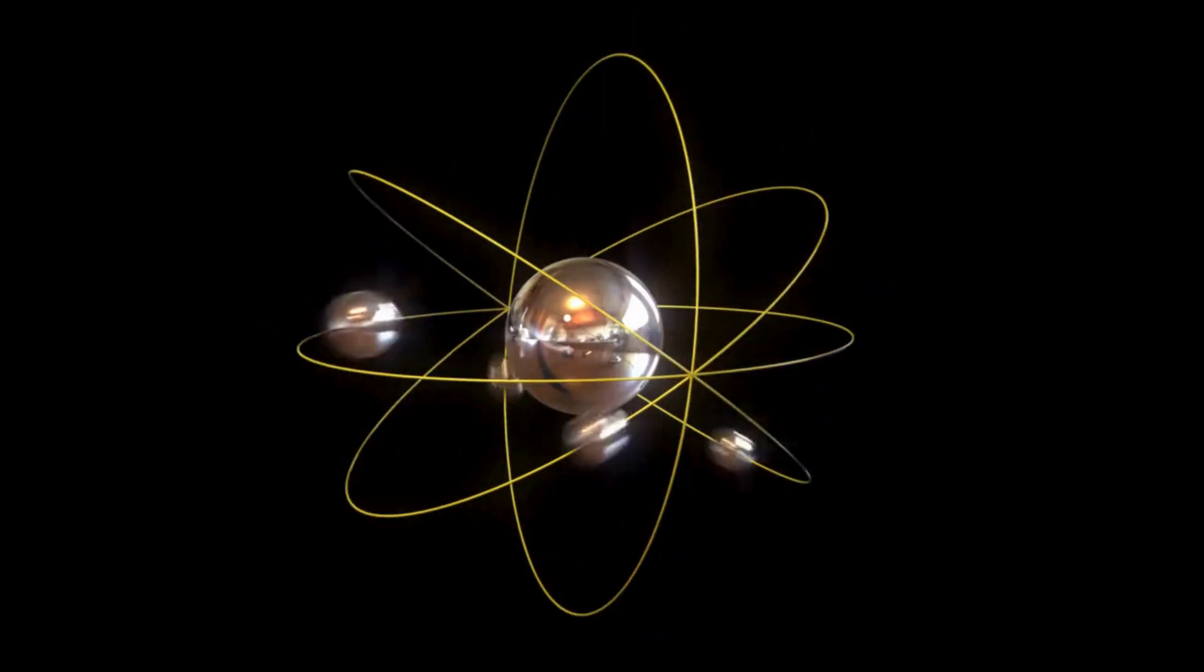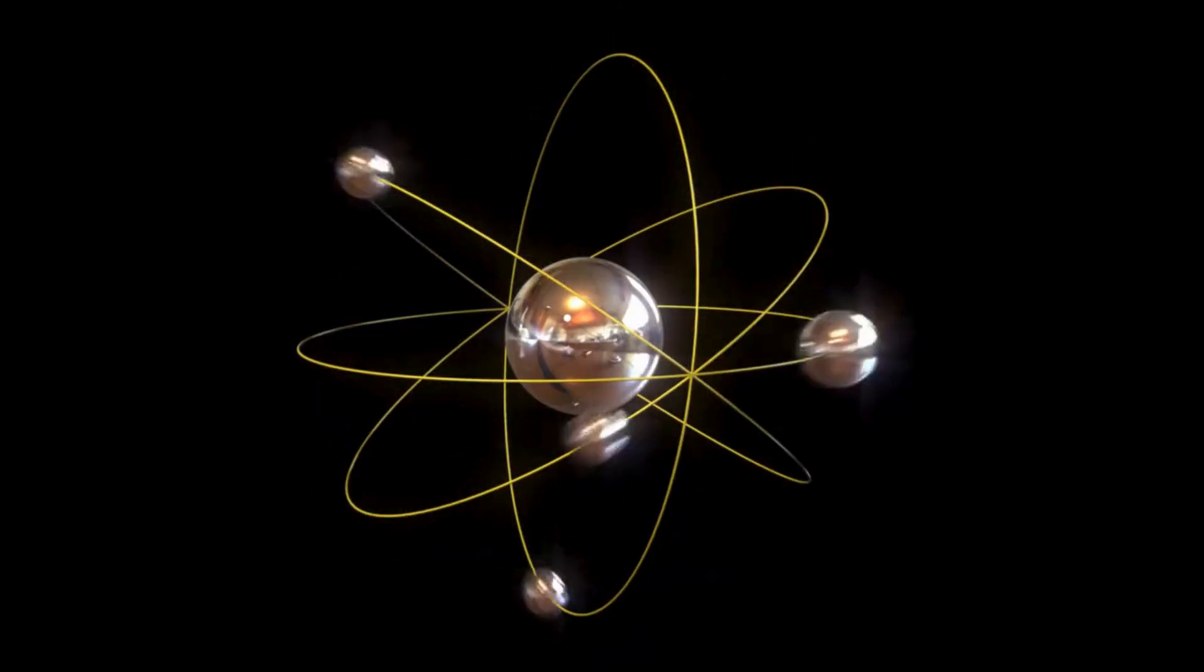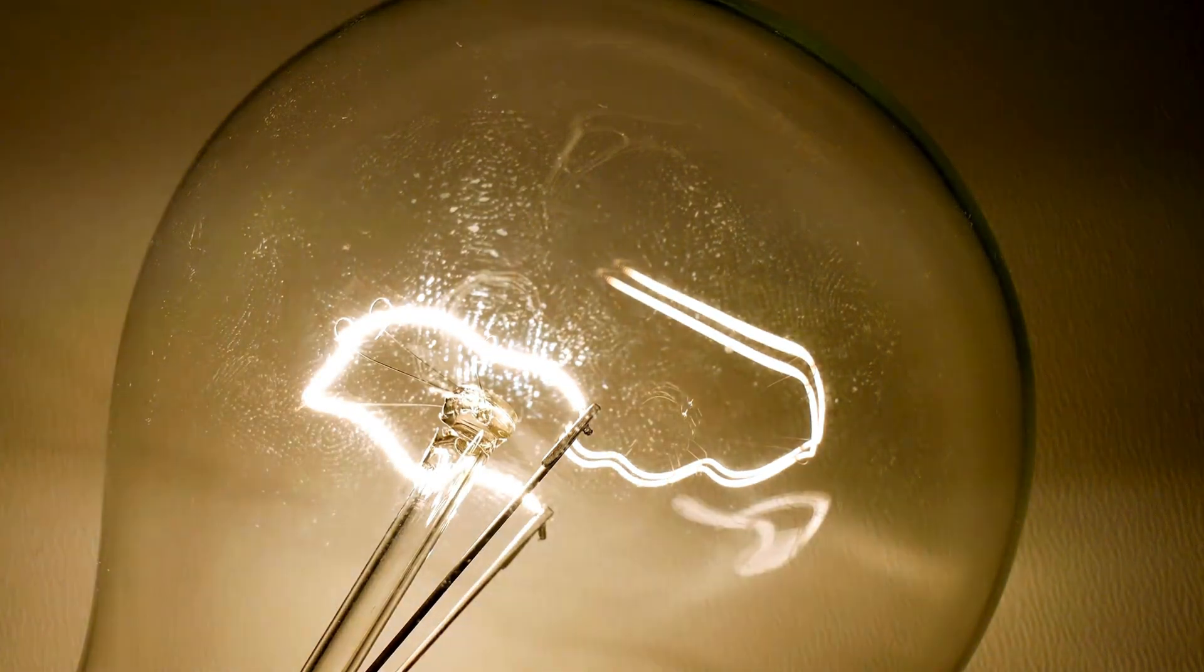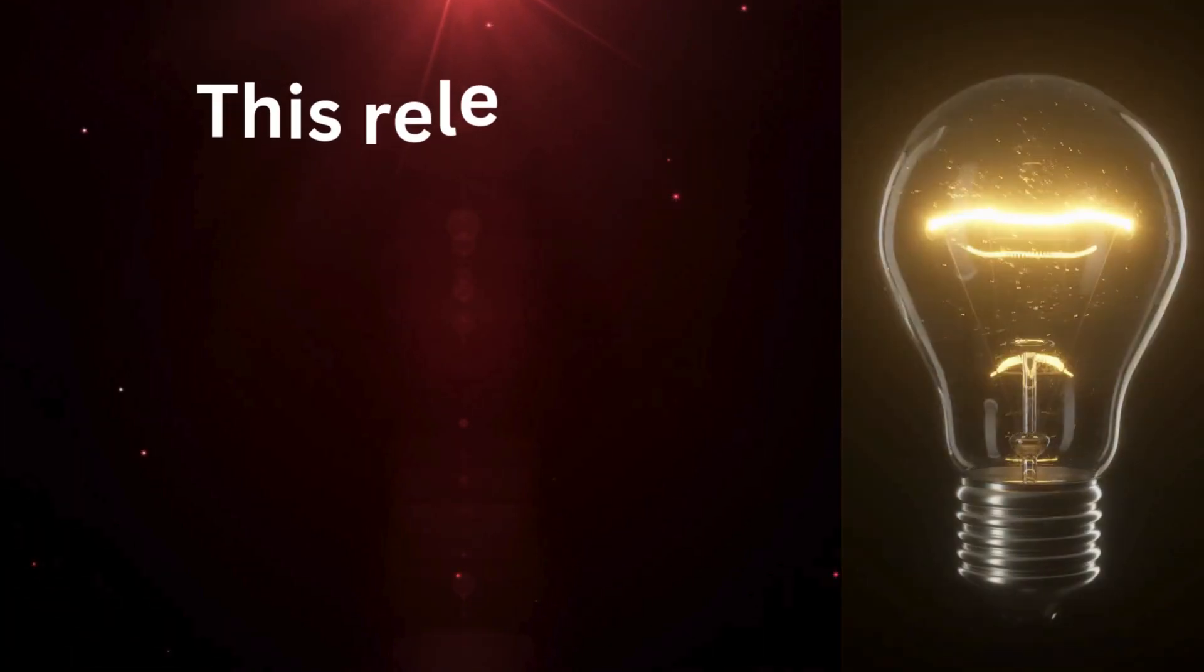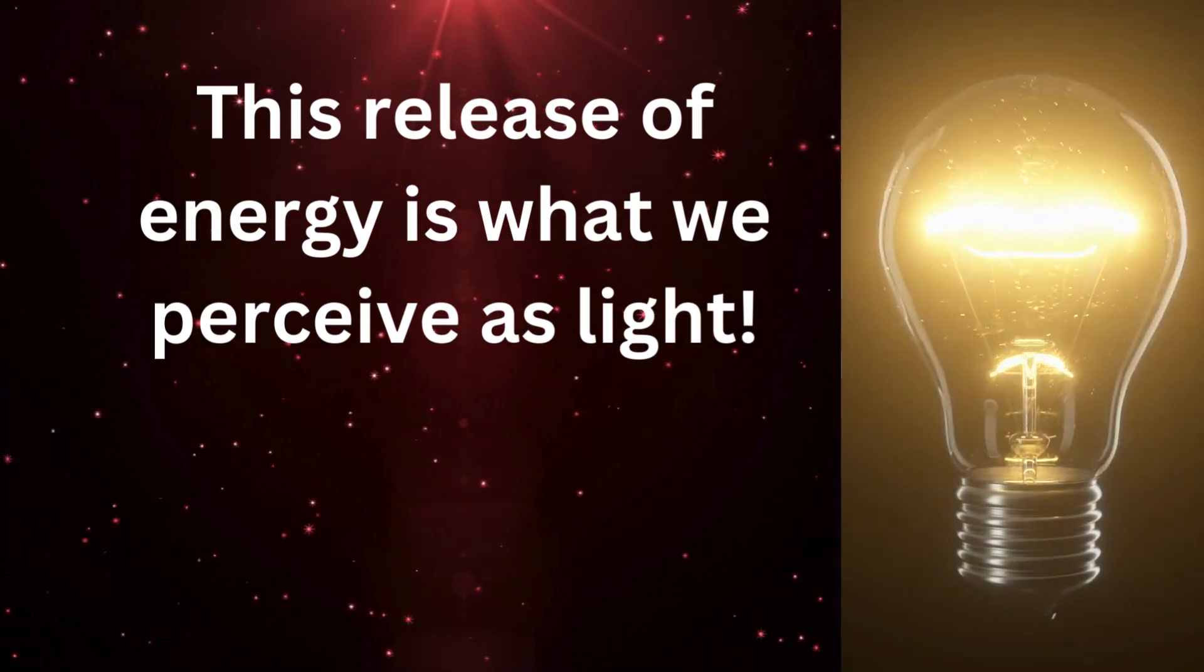However, this state is unstable. Eventually, the electrons want to return to their original lower energy levels. As they do so, they release energy in the form of photons. This release of energy is what we perceive as light.